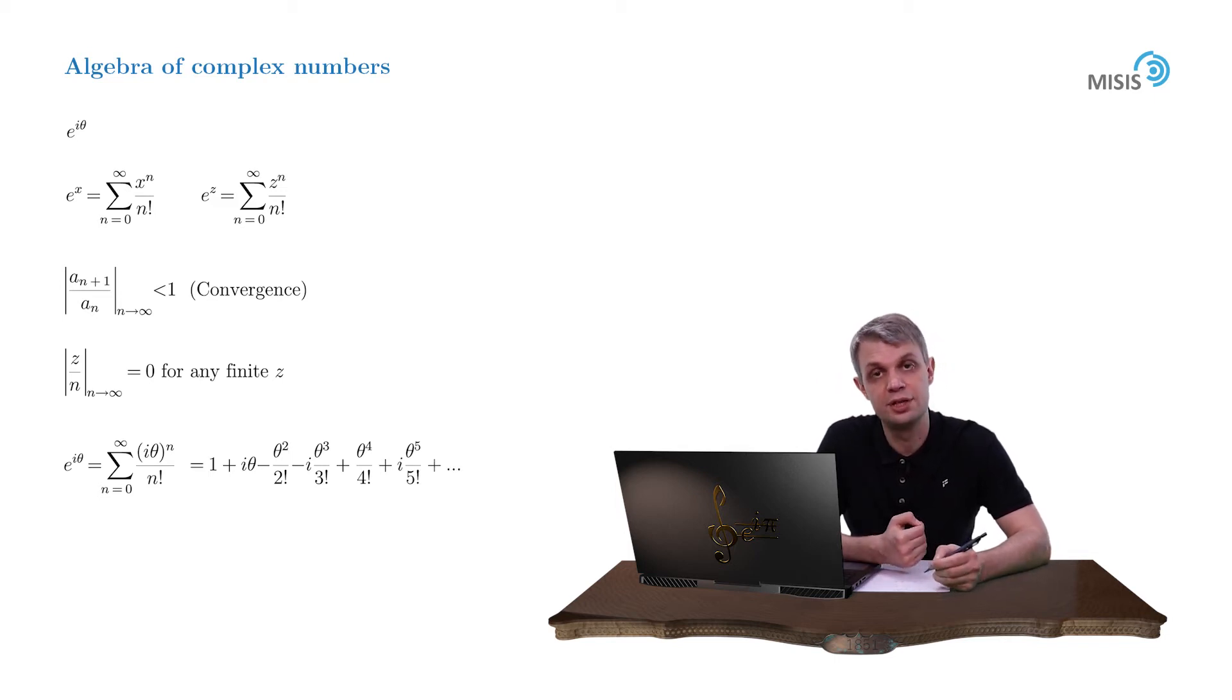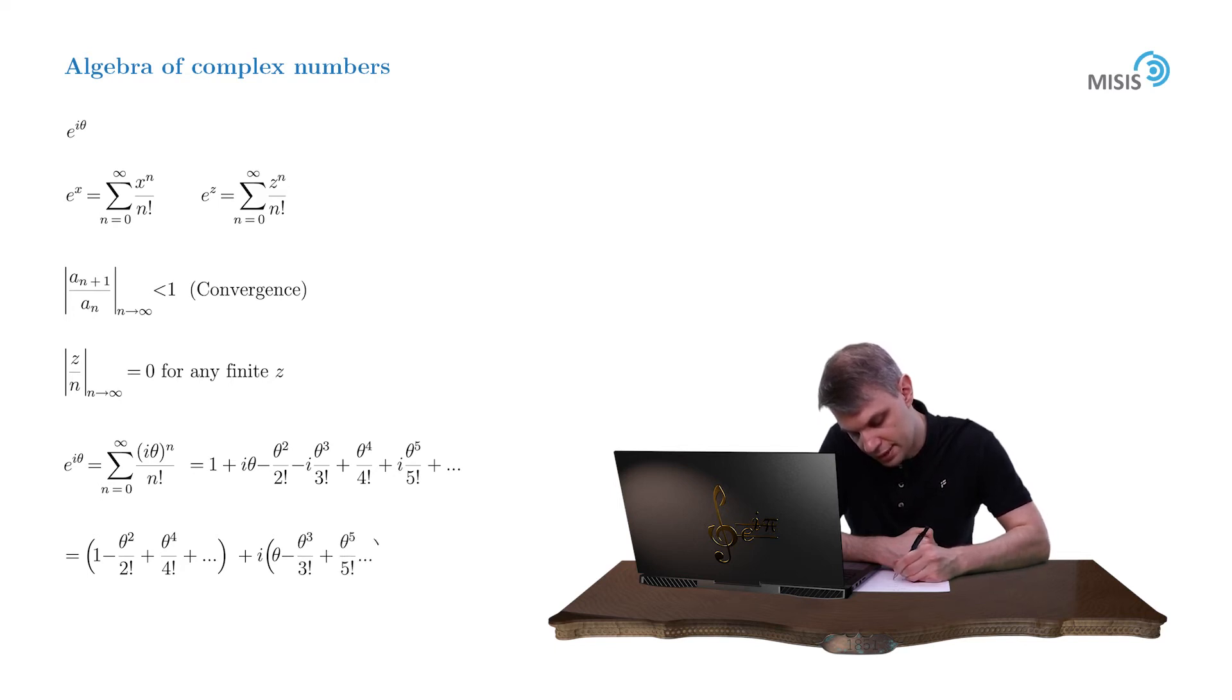And now let's combine the real and imaginary part of this equation. So the real part now reads 1 minus theta squared by 2 factorial plus theta to 4 over 4 factorial and so on. The imaginary part is combined into something different: theta minus theta cubed over 3 factorial plus theta to 5 over 5 factorial and so on.